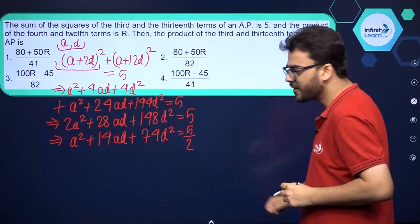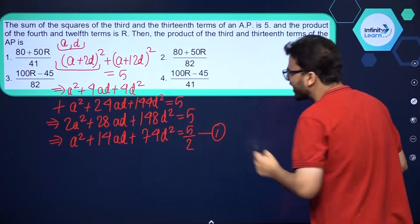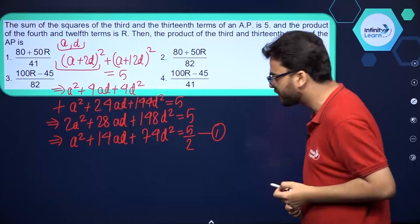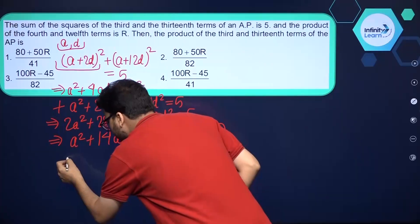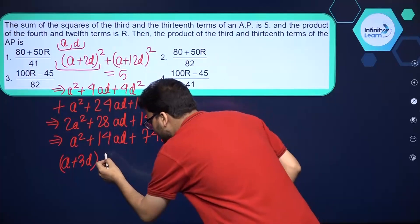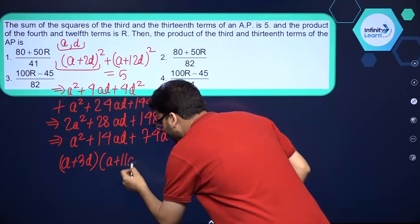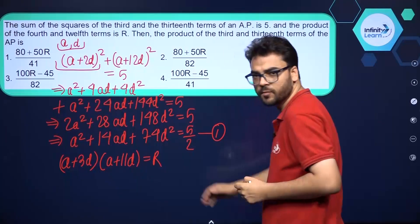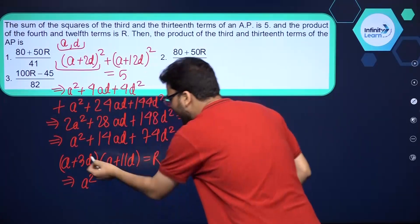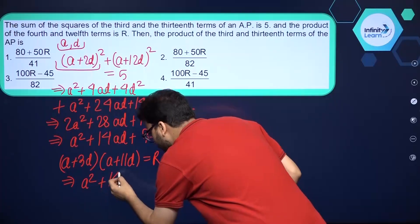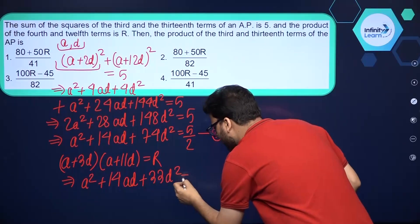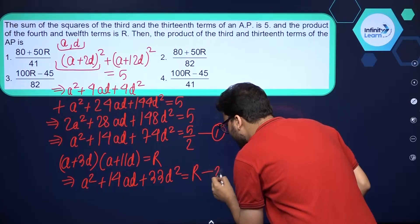Now for the second condition: the product of the 4th and 12th terms is R. The 4th term is A + 3D and the 12th term is A + 11D. Expanding the product: A² + 11AD + 3AD + 33D² = A² + 14AD + 33D² = R. This is Equation 2.